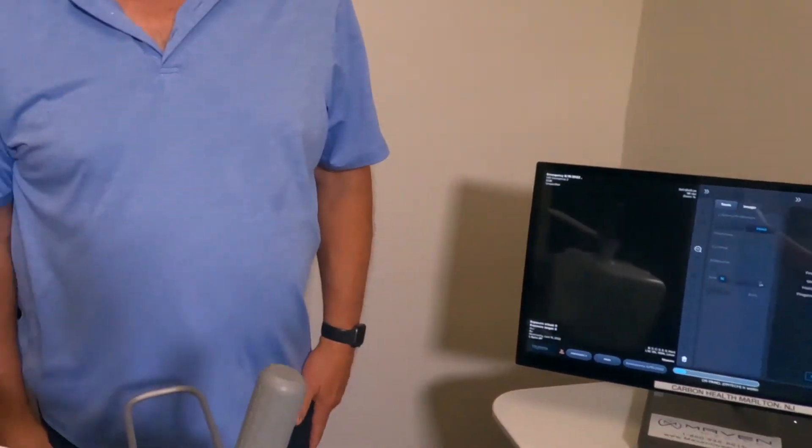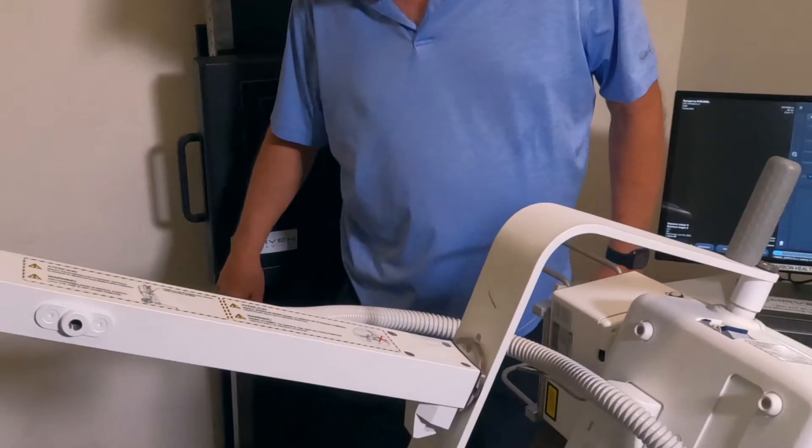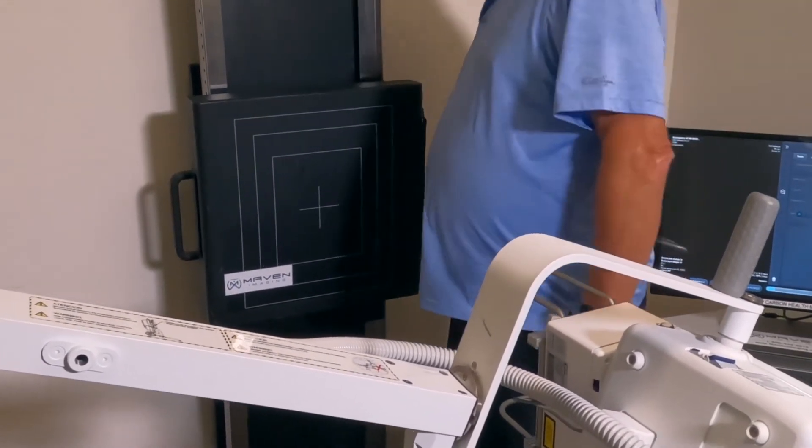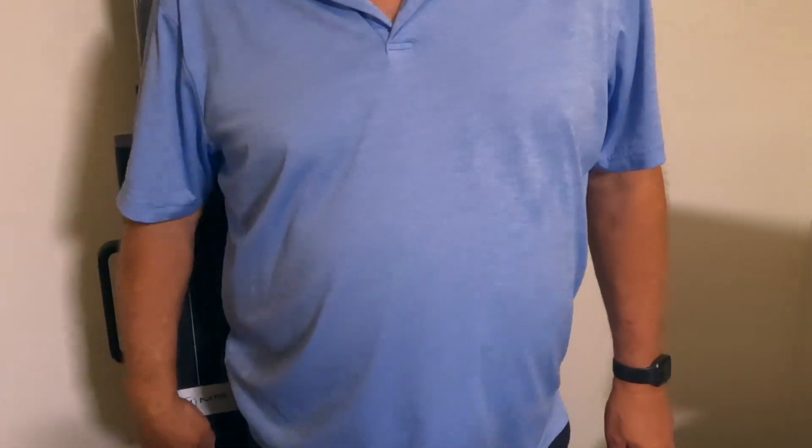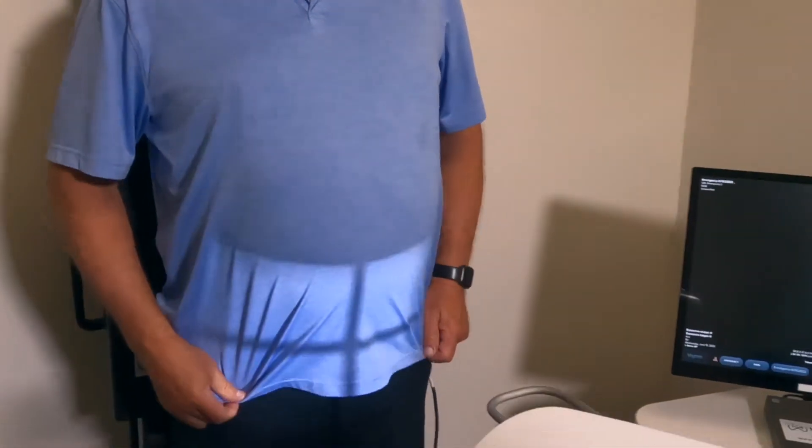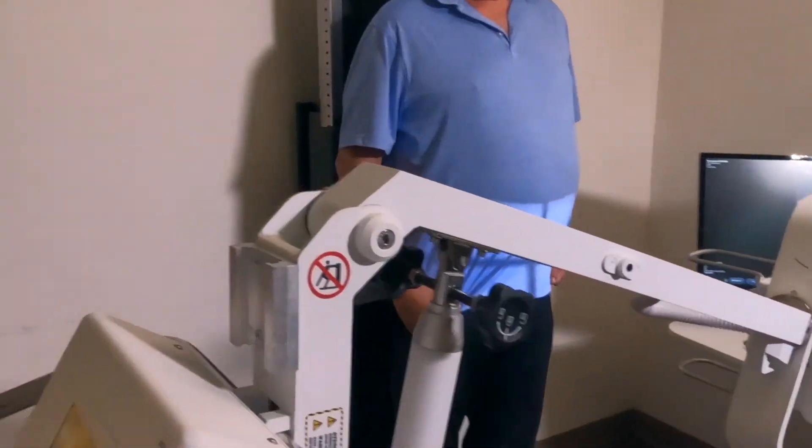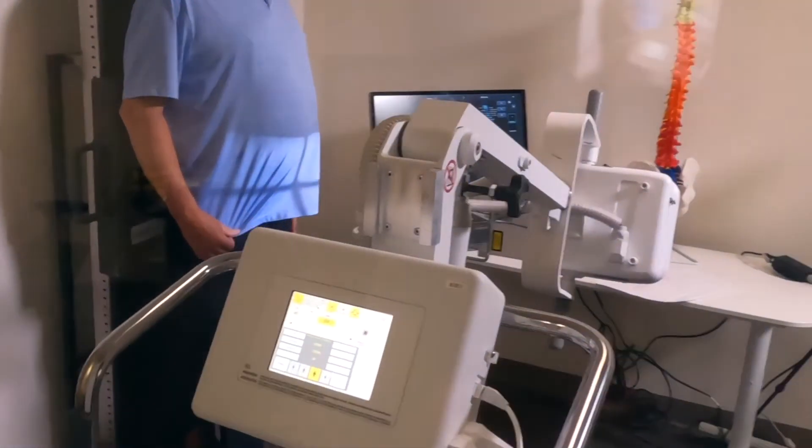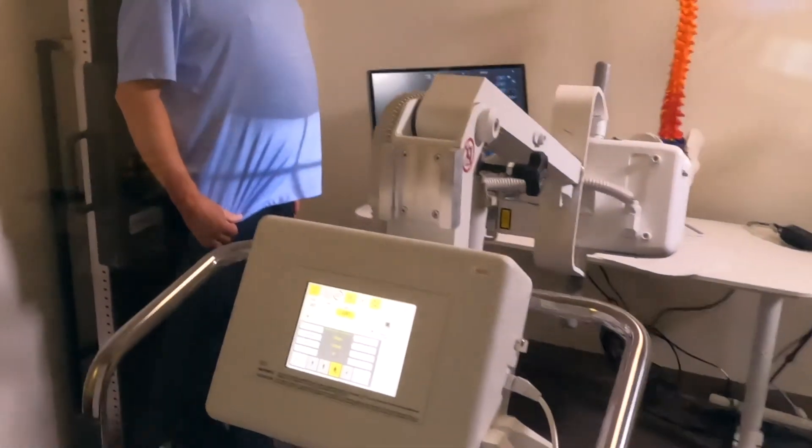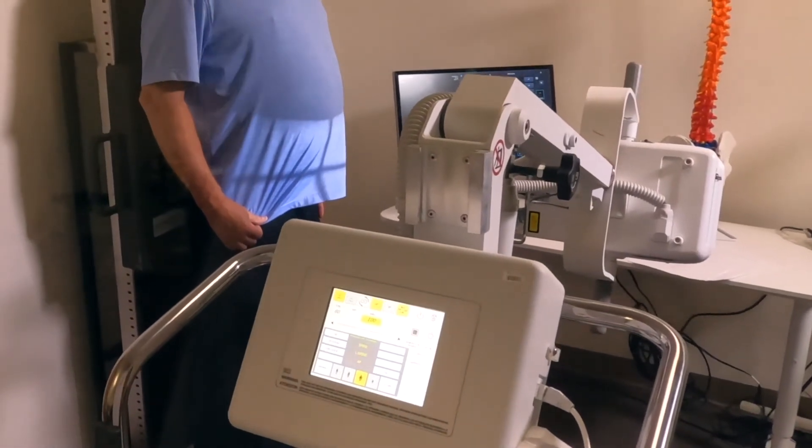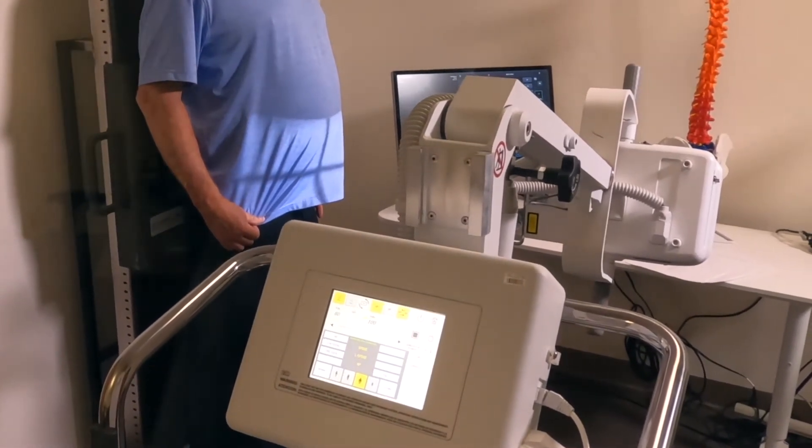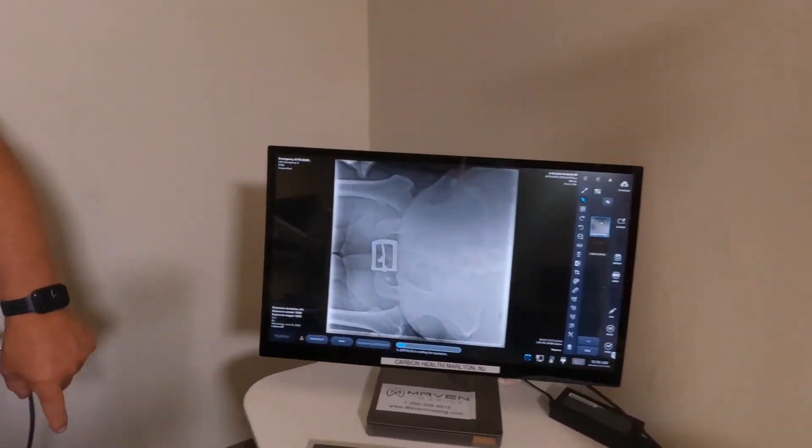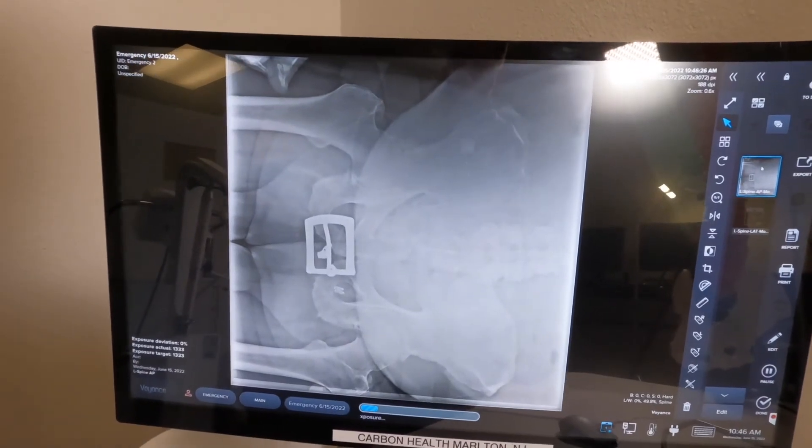We come over to our Void software and click on AP and lateral. The first shot we're going to do is shoot an AP shot. I'm going to position myself on the DR panel. You're going to see on the screen—you're now going to take an AP shot and hold down on the button until you hear the beep.